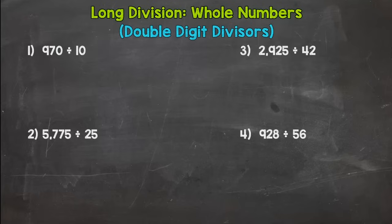So we're going to hop into number one here and it's the same thing as before. We need to set up our problem so we can solve it with our division strategy here. Divide, multiply, subtract, bring down, repeat. The outside number is our divisor, the inside is called the dividend. So we are taking 970 and splitting it into 10 groups.